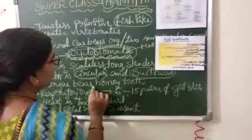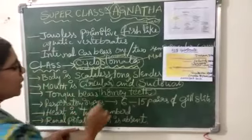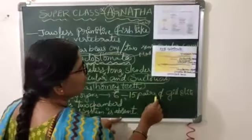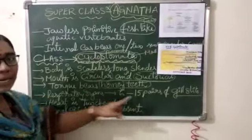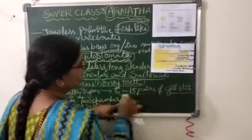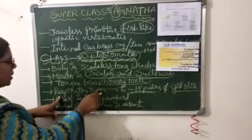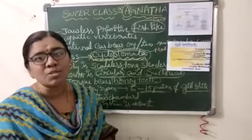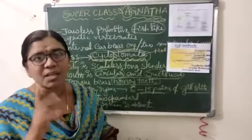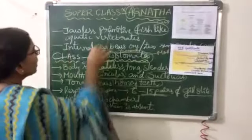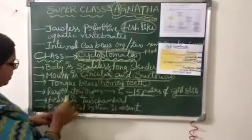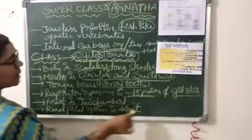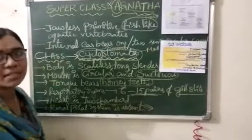The tongue bears horny teeth — they do not have normal teeth. Respiratory organs are 6 to 15 pairs of gill slits present. The heart is a two-chambered heart, similar to fishes. The renal portal system is absent — it belongs to the excretory system.